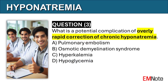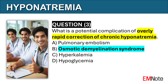Question number three: What is a potential complication of overly rapid correction of chronic hyponatremia? The correct answer is B. A potential complication of overly rapid correction of chronic hyponatremia is osmotic demyelination syndrome, previously called central pontine demyelinosis.